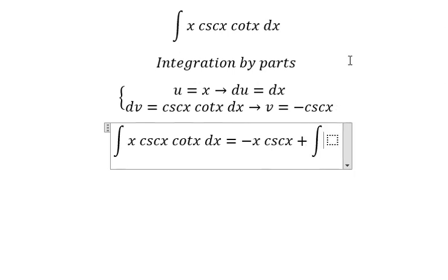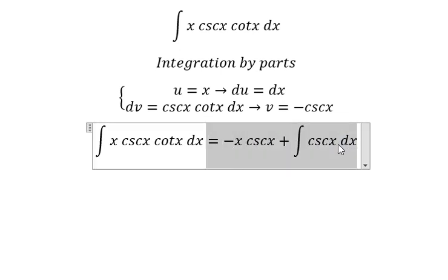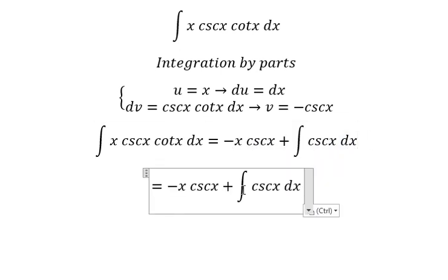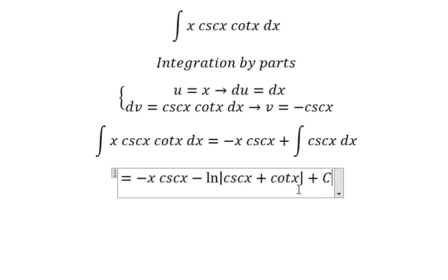And we have the integration cosecant of x dx. The integration of this one, we have negative ln of the absolute value of cosecant of x plus cotangent x, and we put C in here.